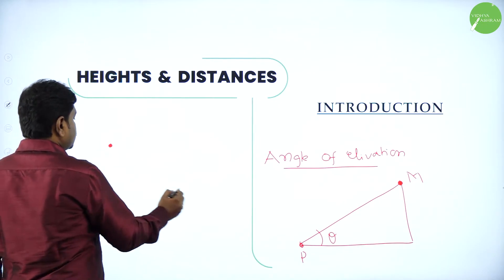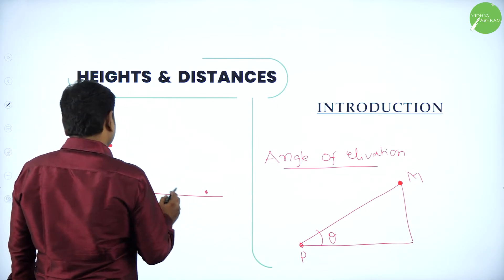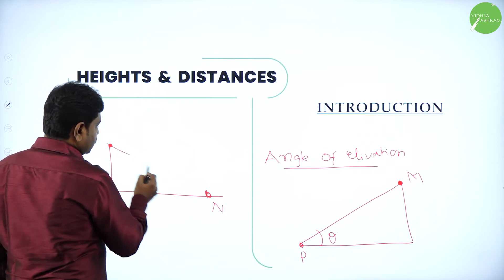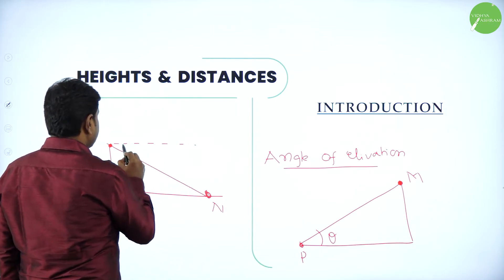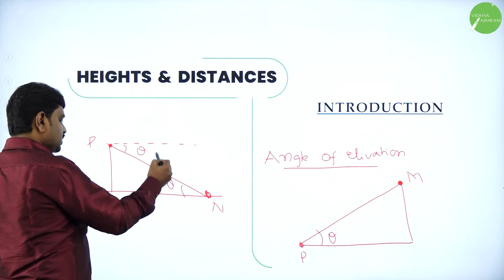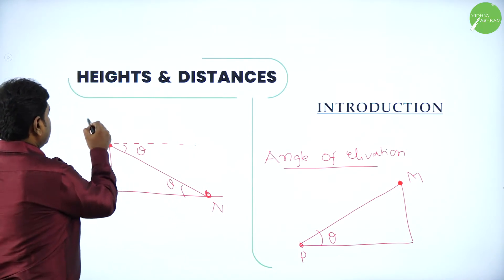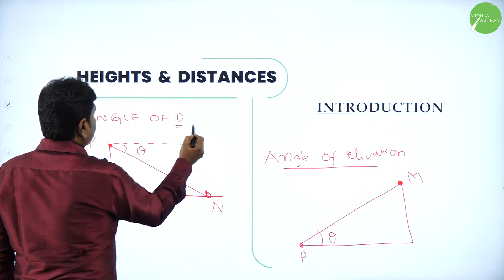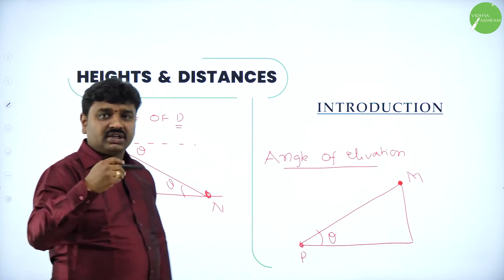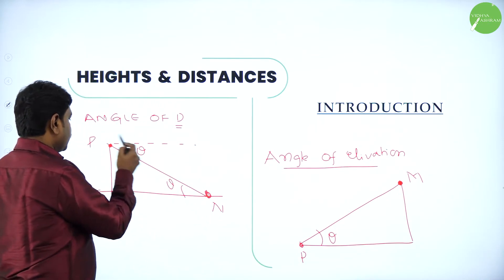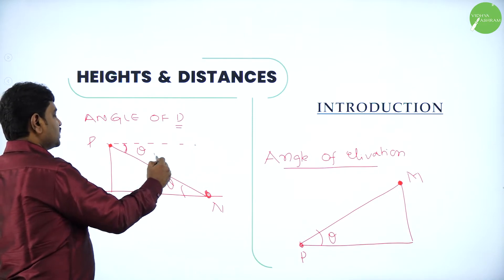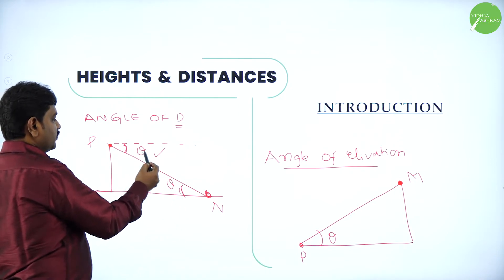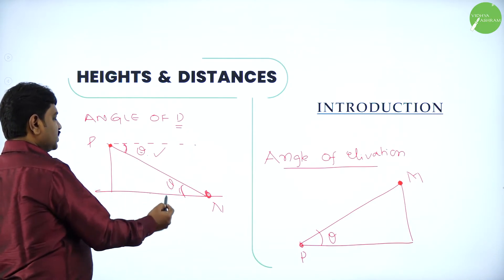Suppose if you want to see an object which is present at a lower level than you — suppose you are at point P and the object is at N — then if you want to see, you will look down. Now if I draw a horizontal, this is the angle of depression. By alternate angles, these two are the same. What we call this is angle of depression. Depression means when you want to see objects which are at lower height than you. If you want to see the object present at N from point P, we make an angle with the horizontal — this is the angle of depression. Since these two lines are parallel, these are alternate angles, so they are equal. Instead of this theta, we can also take theta.